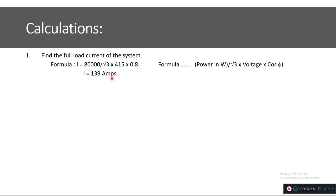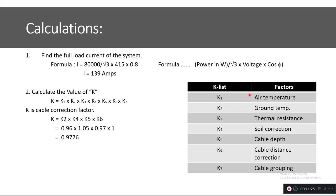However, atmospheric and meteorological factors cause increases or decreases in the current carrying capacity of the cable. So the next step is to calculate the correction factor K. K represents the combined correction factor for the cable based on atmospheric conditions and the cable laying methodology. You can see on screen the list of factors included in K, from K1 to K7.